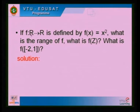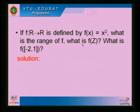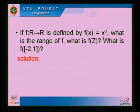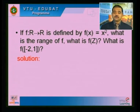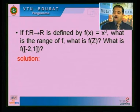Next problem: F is a function from R to R defined by F(x) = x². What is the range of F? What is F(Z)? What is F({−2, 1})? R is the set of real numbers, which includes positive, negative, and zero — all numbers.